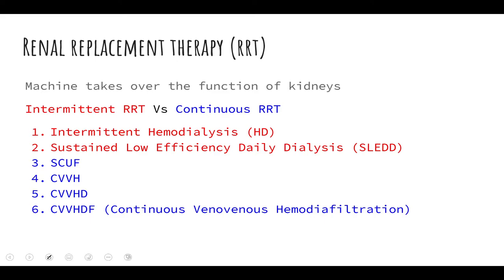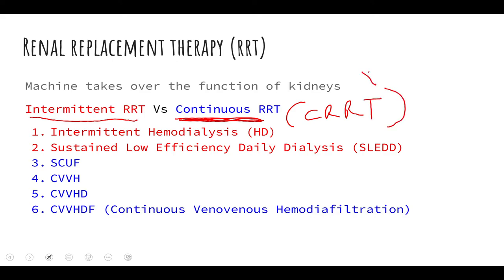Let's talk about renal replacement therapy. Just as the name implies, it is replacing the function of the kidneys — we need this because the kidneys are not properly functioning due to many reasons, such as kidney disease or other conditions. This therapy can be intermittent or continuous. When it's continuous, it becomes CRRT — continuous renal replacement therapy — and that's the focus of this video.